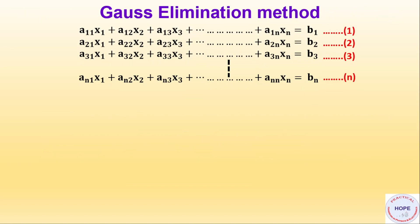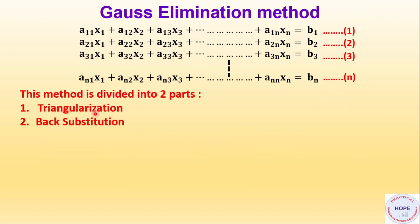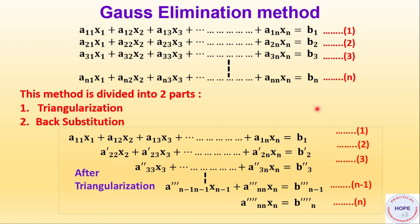The Gauss elimination method can be divided into two parts: first, triangularization, and second, back substitution. Once we do triangularization, we get a set of equations like these. Now we can apply back substitution. We choose the last equation and directly calculate xn equal to bn divided by ann. Then once we know xn, we calculate xn-1 from the n-1 equation. In this way, we keep moving upwards and reach equation 1 from which we can calculate x1.